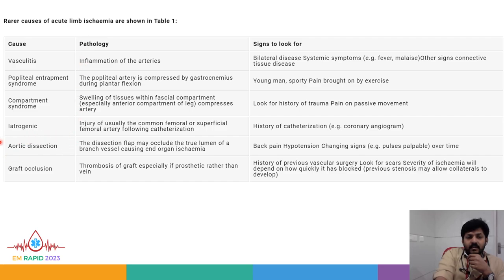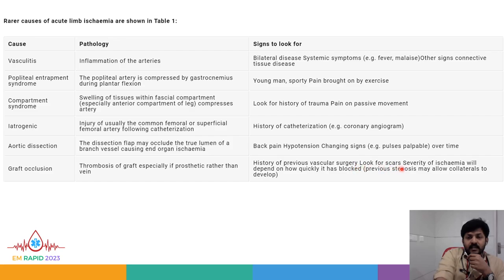A deadly cause is aortic dissection, where the patient typically presents with back pain, hypotension, and changing signs such as changing palpable pulses over time. The dissection flap may occlude the true lumen of a branched vessel causing end-organ ischemia. Graft occlusion refers to thrombosis of a graft, especially prosthetic rather than vein — always ask for history of previous vascular surgery and look for scars. The severity of ischemia will depend on how quickly it blocked, and previous stenosis may allow collaterals to develop.